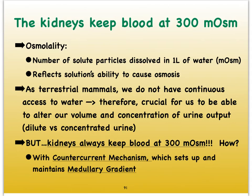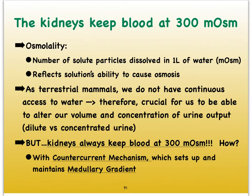These osmolality numbers give us an idea of how much osmosis — meaning the passive movement of water — can occur. Our kidneys keep our blood at 300 milliosmoles. That's challenging because we humans are terrestrial mammals constantly challenged with varying water conditions. We need to either increase or decrease water excretion depending on circumstances, so we must be able to alter how much urine we put out and what the concentration of that urine is — dilute versus concentrated urine.